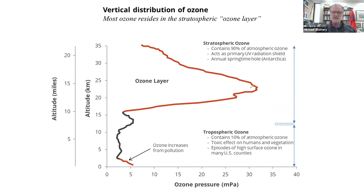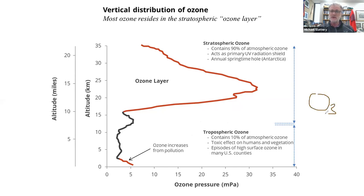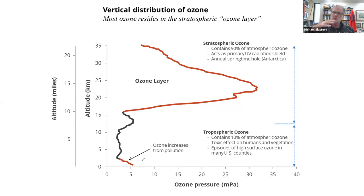The air above your head right now is exerting a force — the sum of all those gases is what we experience as atmospheric pressure. As we'll discuss next week with climate change, the majority of gases are nitrogen and oxygen, with some carbon dioxide, water vapor, and also O3 — but ozone is a tiny fraction of the total gas in the atmosphere.